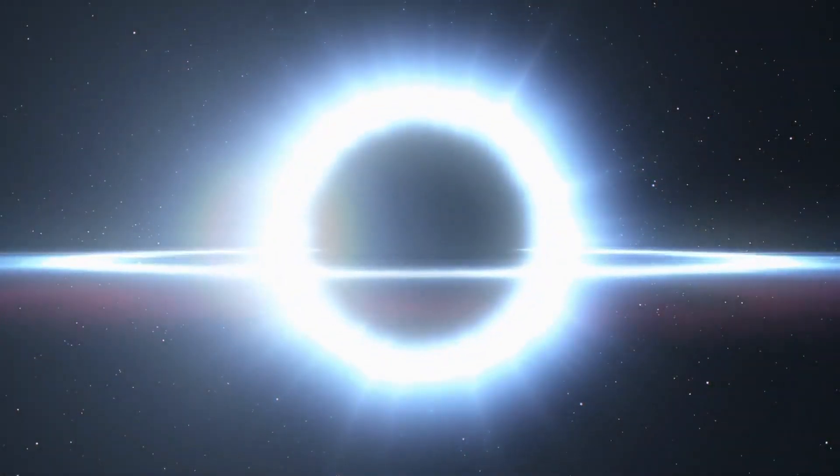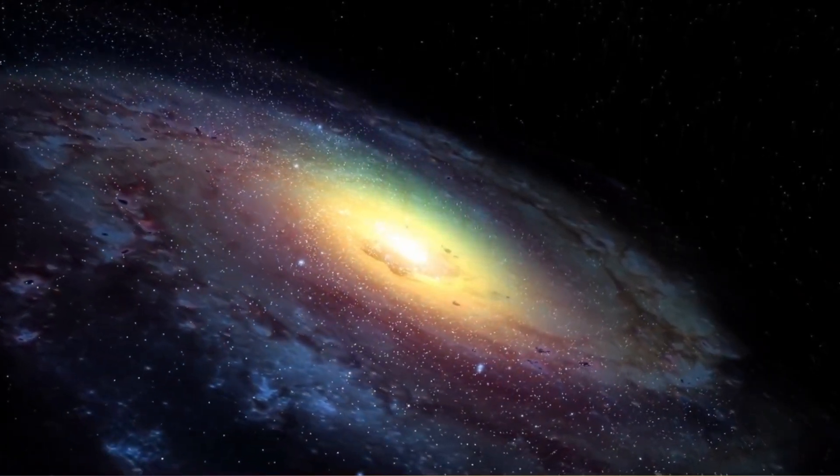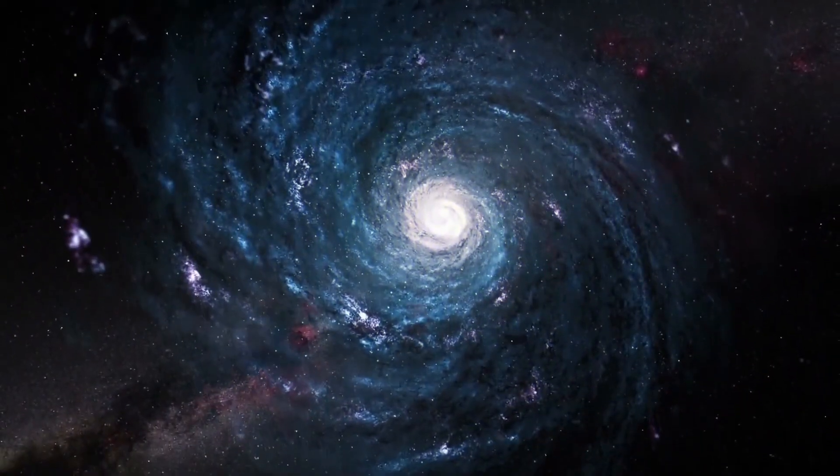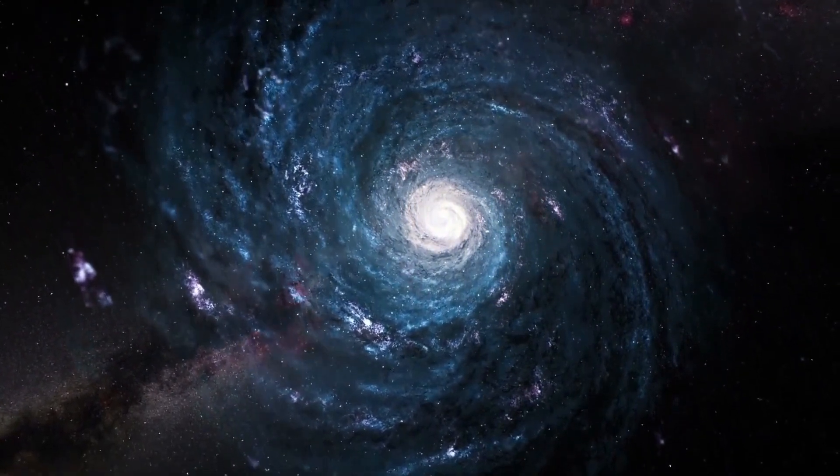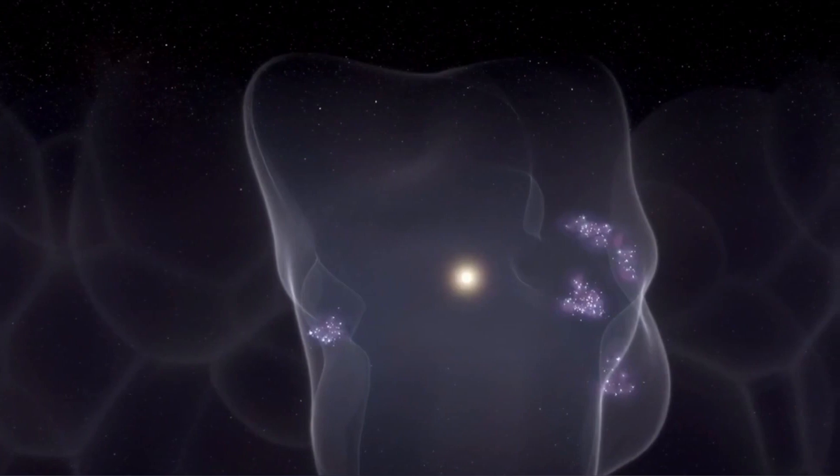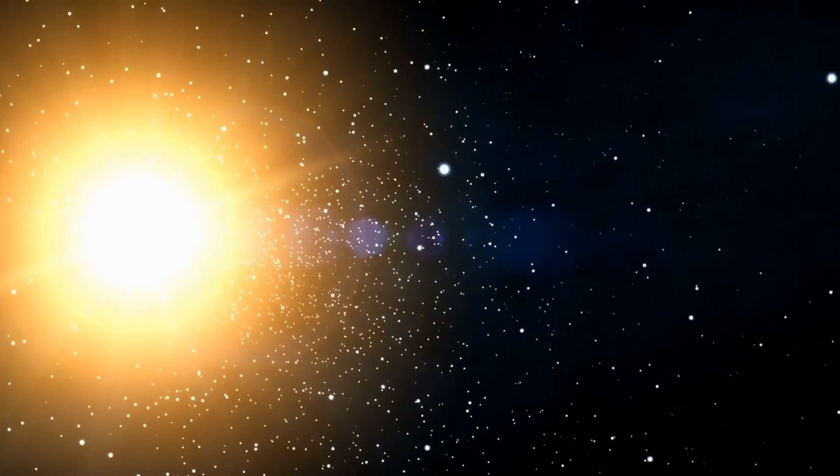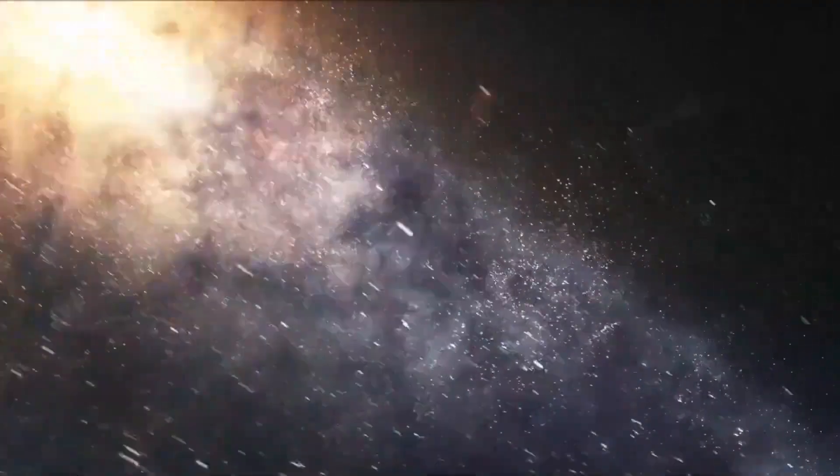However, we do know this – our galaxy likely holds hundreds of billions of such planets. The steady drumbeat of discovery began in 1992, with strange new worlds orbiting an even stranger star. It was a type of neutron star known as a pulsar – a rapidly spinning stellar corpse that pulses with millisecond bursts of searing radiation.